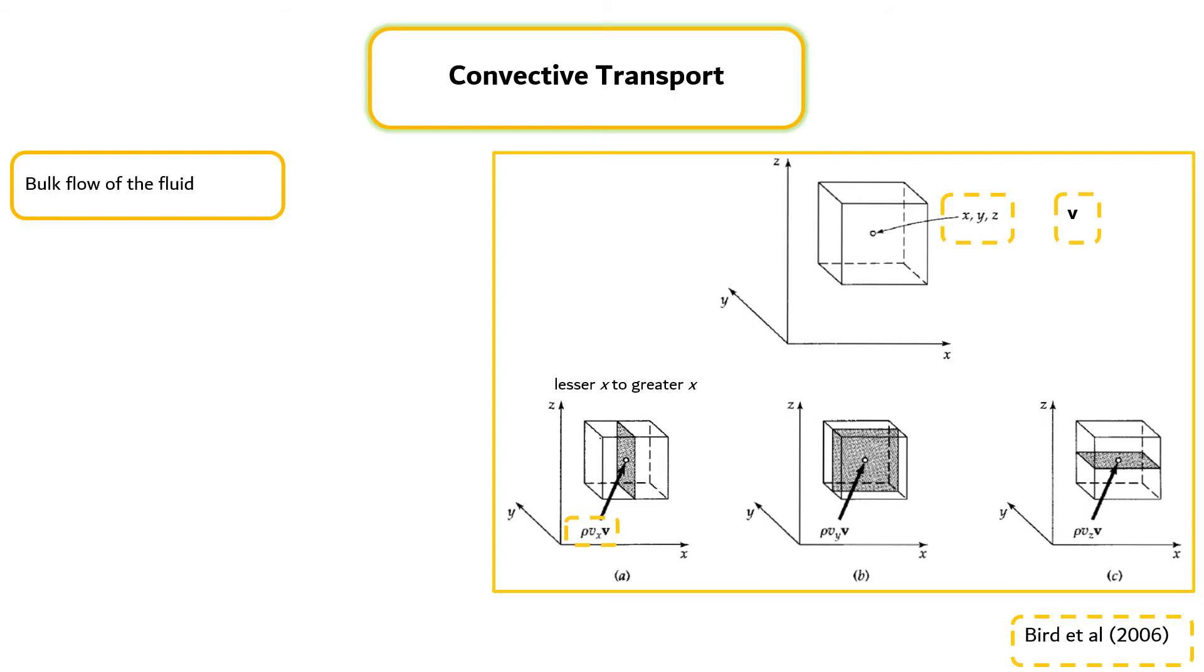Similarly, the momentum flux across the shaded area in B is v_y ρv, and the momentum flux across the shaded area in C is v_z ρv. These three vectors ρv_x v, ρv_y v, and ρv_z v describe the momentum flux across the three areas perpendicular to the respective axes.